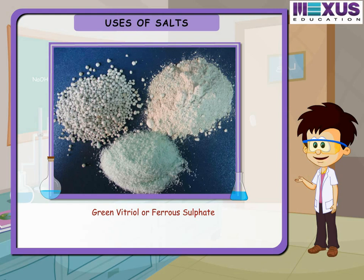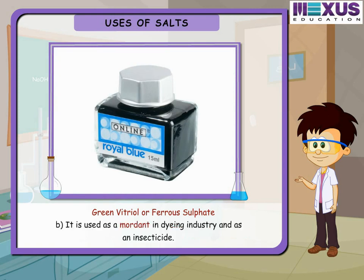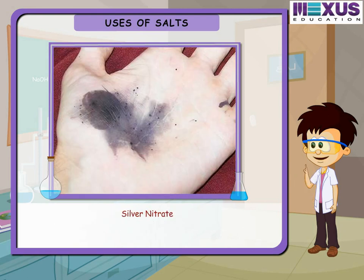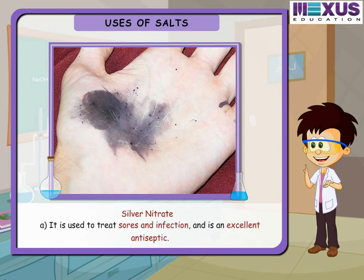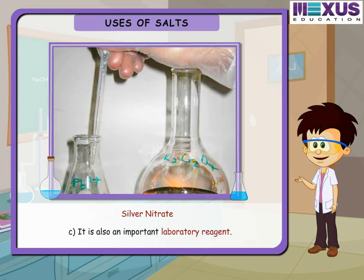Green vitriol, or ferrous sulfate, is an important constituent of blue and black ink. It is used as a mordant in the dyeing industry and as an insecticide. Silver nitrate is used to treat sores and infections, is an excellent antiseptic, is widely used in photography, and is also an important laboratory reagent.